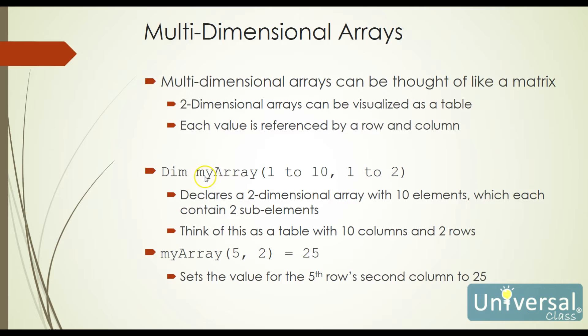I want to mention an array called MyArray that has 10 rows and 2 columns. Just like our R1C1 format, we do rows first. Our rows are going to be numbered 1 through 10, and our columns are going to be numbered 1 through 2, giving us 20 elements total — 10 per column, 2 columns. So if I want to reference the fifth row, second column, I can say MyArray(5, 2) and set that equal to 25. That sets the value for the fifth row's second column to 25.